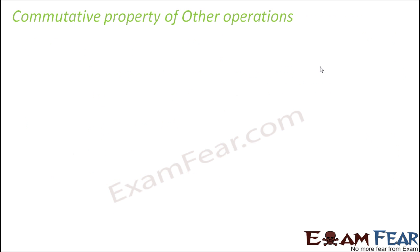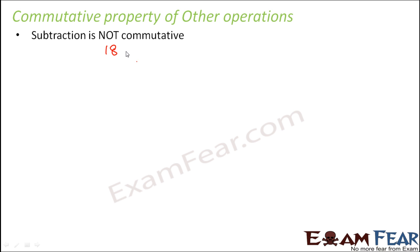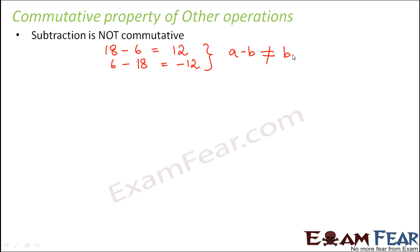What about subtraction, division, and multiplication? Let us quickly look at the commutative property of all other operations, starting with subtraction. Consider 18 minus 6 — we get 12. Now when we interchange the positions, it becomes 6 minus 18, and the result is minus 12. So this shows that A minus B is not equal to B minus A. Therefore, subtraction is not commutative.